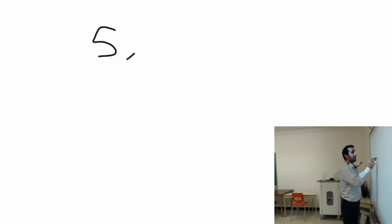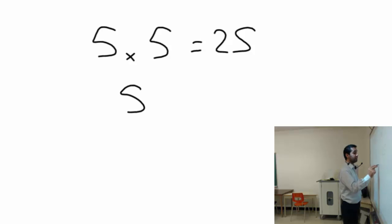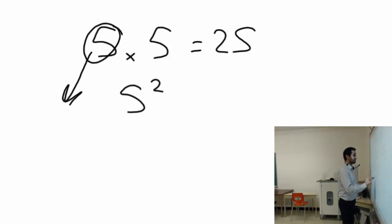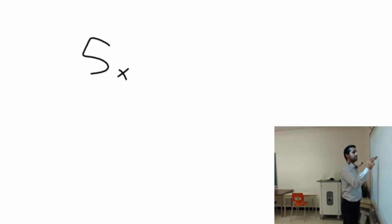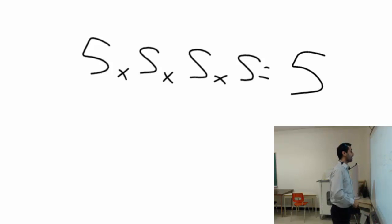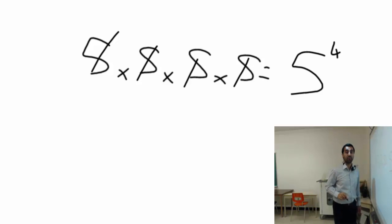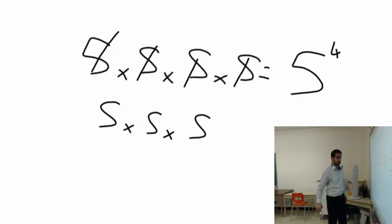First of all, let's talk about exponents. 5 times 5 is 25, and it is also represented as 5 squared, or 5 to the power of 2, because there are two fives. Similarly, for 5 times 5 times 5 times 5, you can shorten that as 5 to the power of 4, since there are four fives.